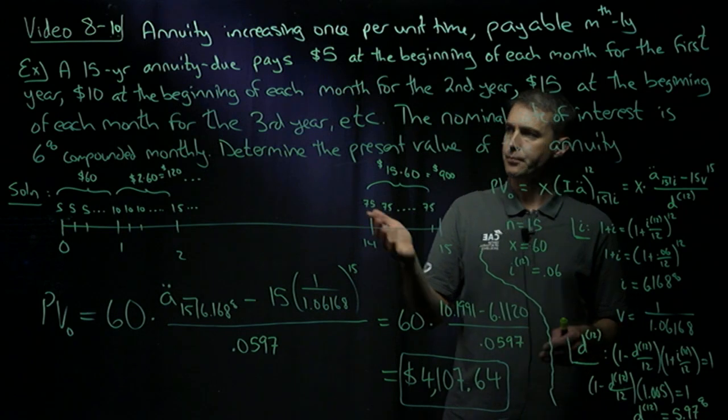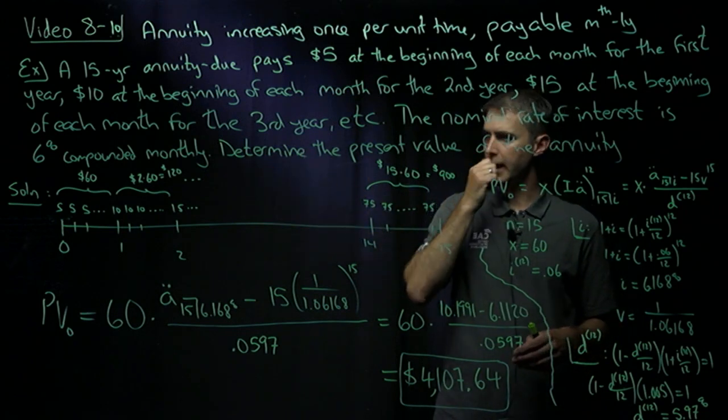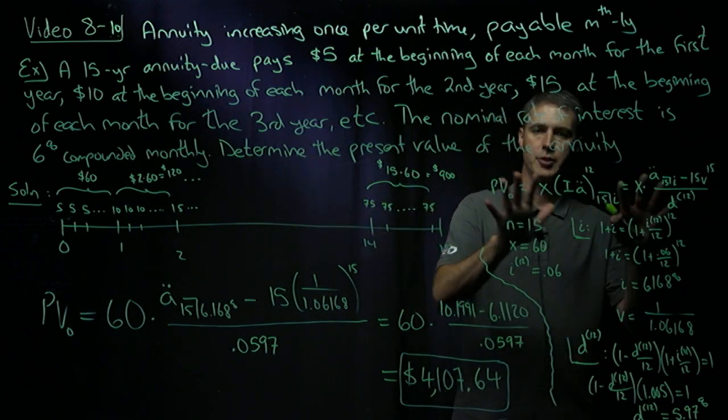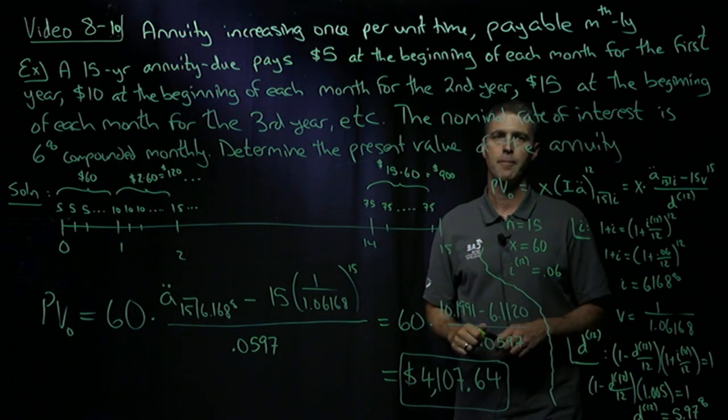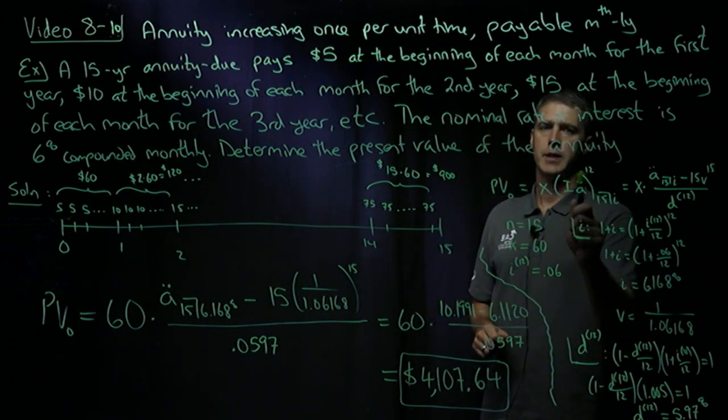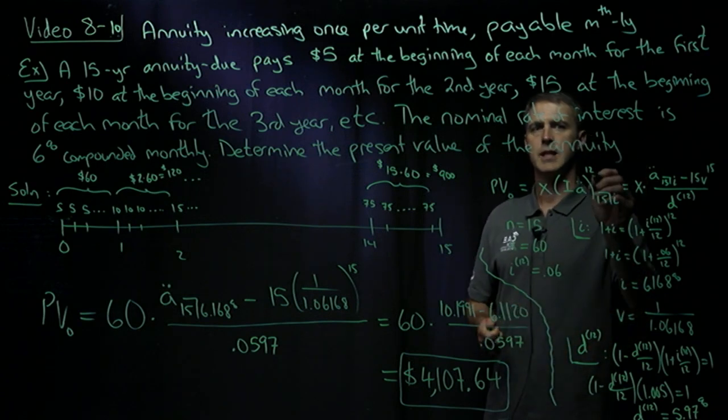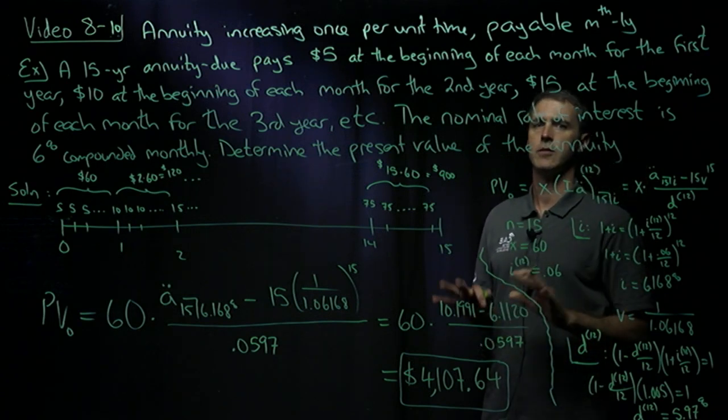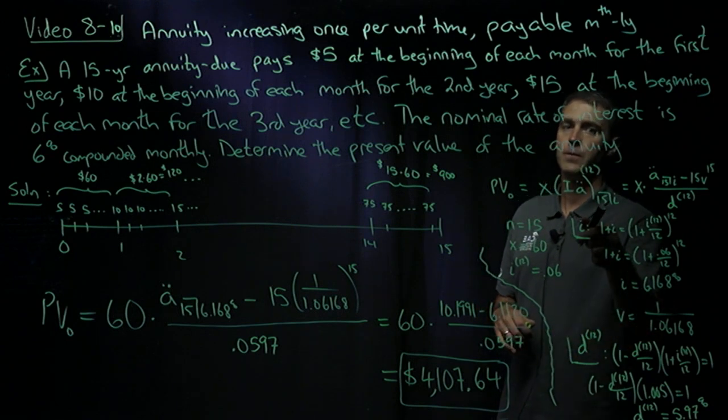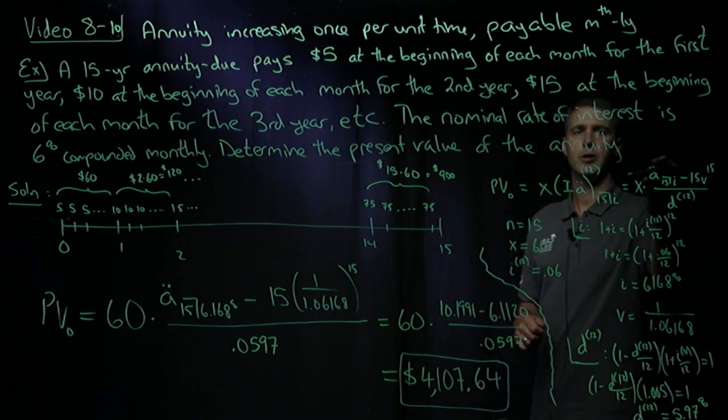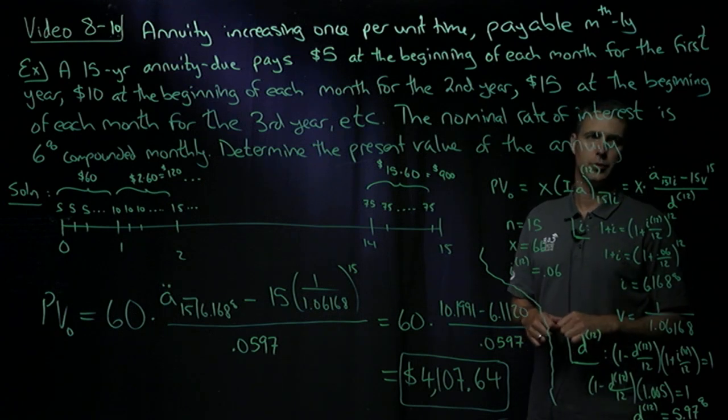So I've got all the information I think I need from the time value diagram, and I'm just going to remind myself of the formula. I'm after the present value of an increasing annuity due with a payment of X. It's being received, payments are being received 12 times a year. I have 15 years and an unknown interest rate. And here is the formula I'm eventually going to use.